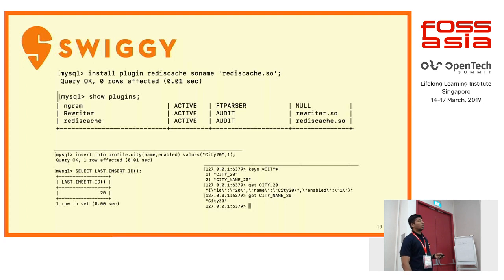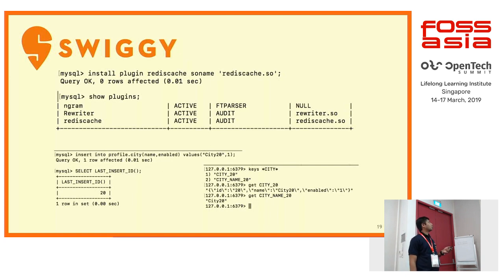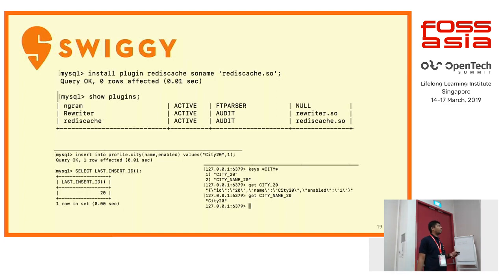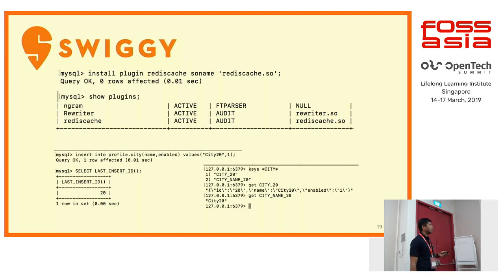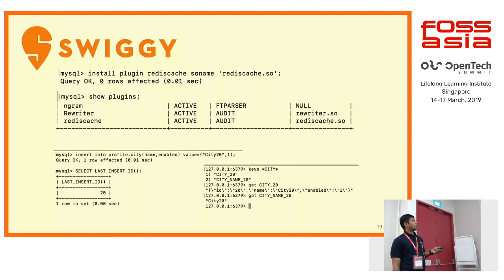The implementation: you install the plugin, and it shows the Redis cache plugin as active. This is currently written as an audit plugin, though it may be changed to something more suitable in future versions. Then you insert into profile.city with name and enabled values, for example 'city 21'. You get last insert ID as 20.